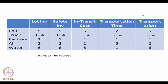The performance of different transportation modes has also been ranked. Rank 1 means the lowest value for a given criterion — for example, water has the lowest transportation cost while air has the highest. Each mode has been ranked subjectively according to different criteria such as transportation time and cost.